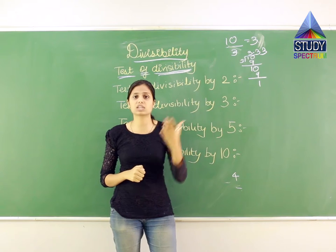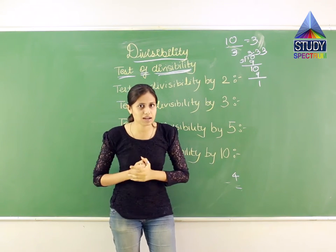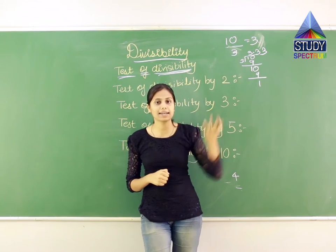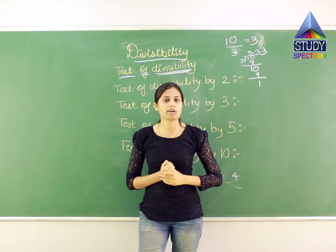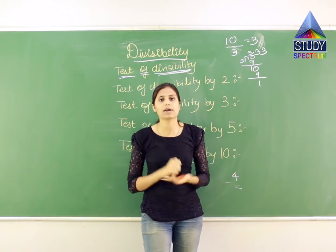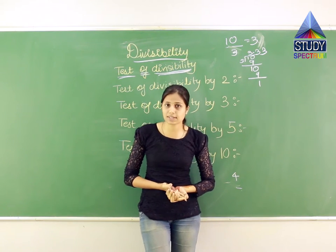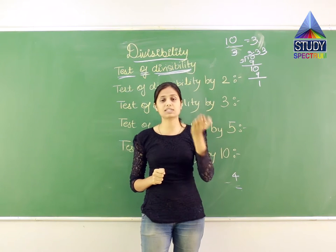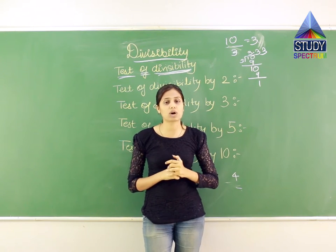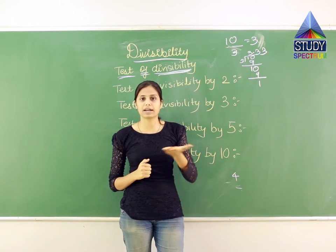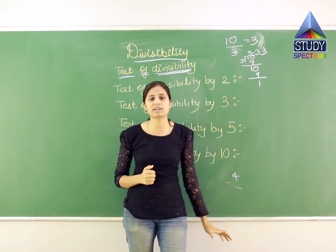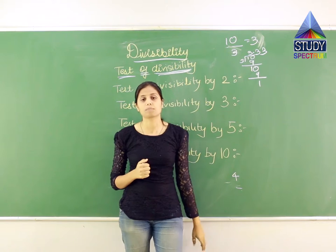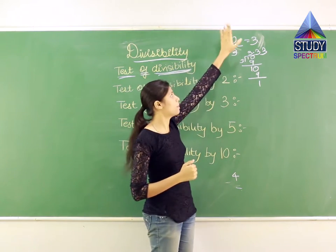Let us check 4: 4×1=4, 4×2=8, 4×3=12. 10 does not appear in the table of 4, so 10 is not divisible by 4. Let us take 5: 5×1=5, 5×2=10. Yes! So 10 is divisible by 2 and also by 5. Checking 6: 6×1=6, 6×2=12 — 10 is not divisible by 6. Checking 7: 7×1=7, 7×2=14 — not divisible by 7. Checking 8: 8×1=8, 8×2=16 — not divisible by 8. Checking 9: 9×1=9, 9×2=18 — not divisible by 9. And 10×1=10, so 10 is divisible by 10.